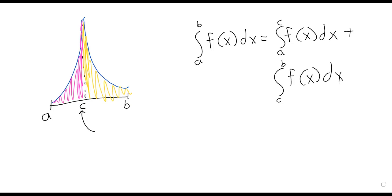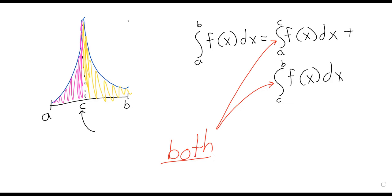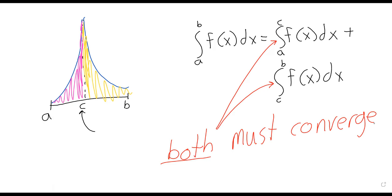The only thing I want to stress here is we know that these integrals might exist or might not exist. For an integral like this, if it's going to converge, both of those integrals must converge. If one of those integrals doesn't exist, neither does the whole. If one of these integrals diverges, then this integral diverges—the other one doesn't matter.